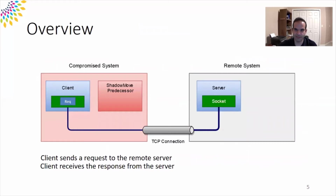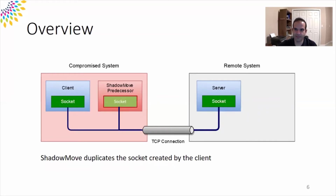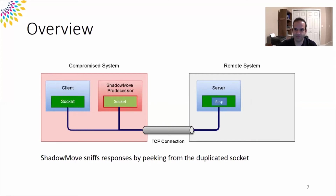Before getting into details, let's take a brief overview of how ShadowMove replicates itself to a remote system. Suppose on a compromised system a client is connected to a remote server and a ShadowMove process is running. The client process uses its socket to send a request to the remote server and receive the corresponding response. ShadowMove first duplicates the socket owned by the client process. ShadowMove can peek from these duplicated sockets to sniff the server responses without interrupting the client.